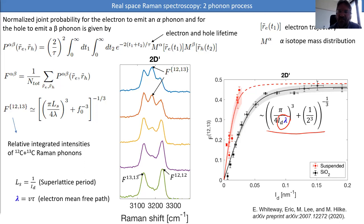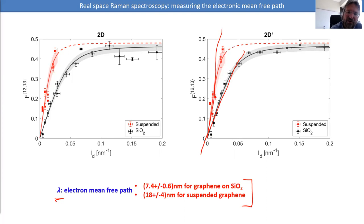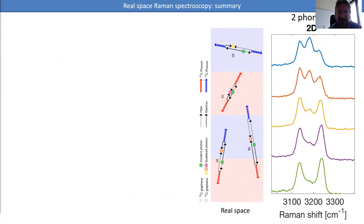Looking at the data: we plot the size of the middle (mixed) peak as a function of period, and then as a function of inverse superlattice period. The straight line is the simple formula; the dots are experimental data — red for suspended graphene (higher mobility) and black for graphene on silicon oxide (more scattering). The simple expression fits very well. The important parameters are the inverse superlattice period and the total electron mean free path. This is a direct measurement, regardless of whether electrons scatter first with other electrons or phonons.